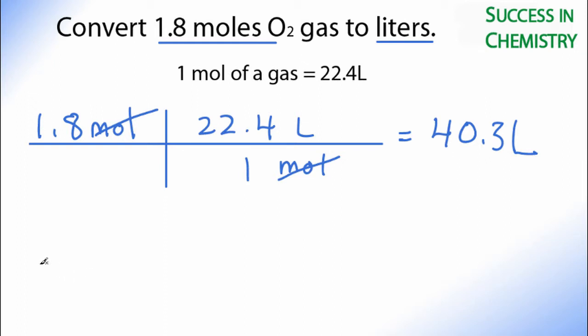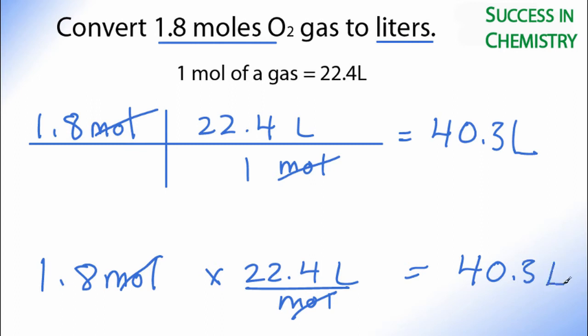You can also take and multiply your 1.8 moles of oxygen gas there times 22.4 liters per mole. And when you do that, moles will cancel out. You'll be left with liters, and 1.8 times 22.4 liters is 40.3 liters.